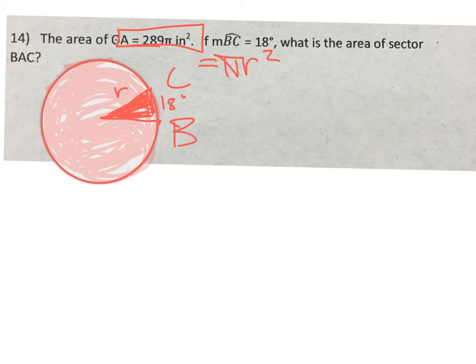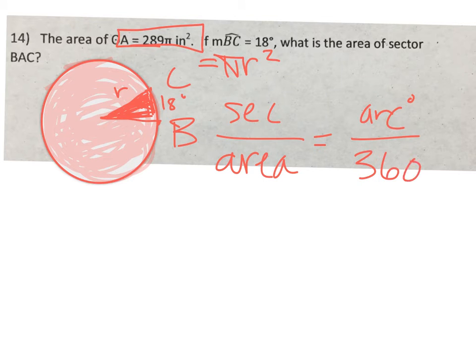If we use the formula sector over area equals arc over 360, we know the area, that's 289π. We know the arc, that's 18 degrees. So there's really nothing we have to do except plug everything in to where it needs to go.